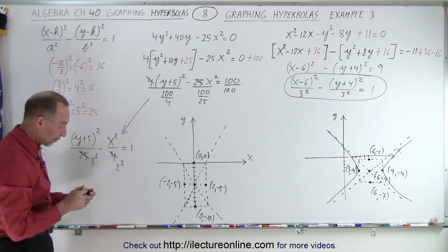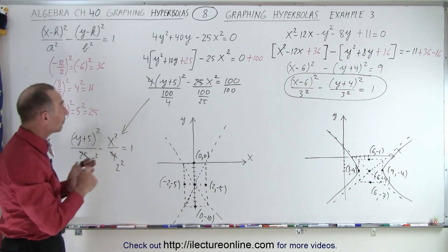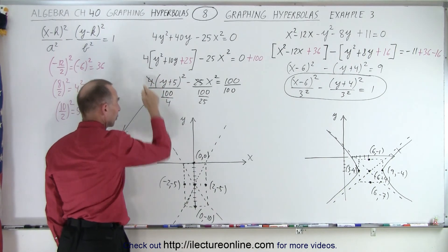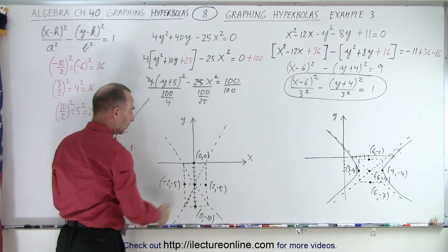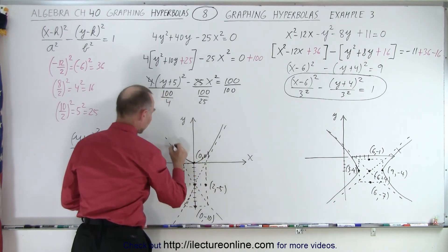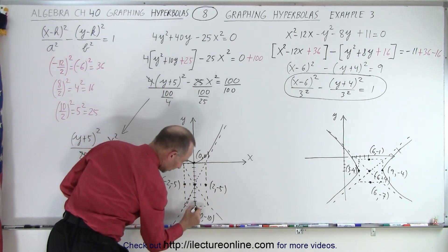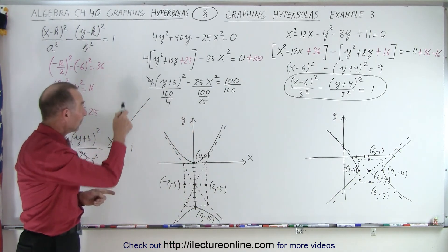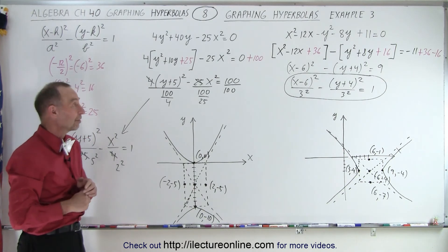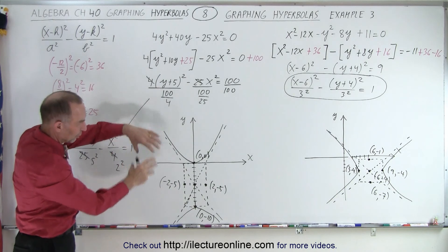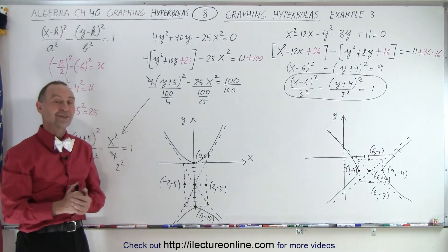Now we need to understand if we are going to open up and down or left and right. Notice that the y squared term is a positive term, which means the hyperbola will open up and down. And that is how we graph this hyperbola. Again, because the y squared term is positive, in that case, the x squared term is positive, so it opens up sideways. Here it opens up and down. And that is how it's done.